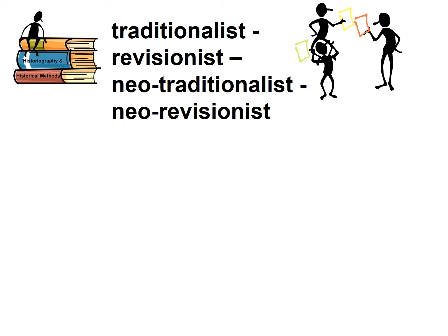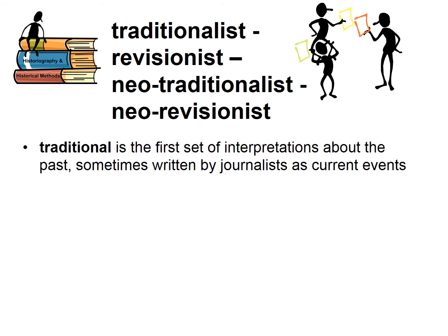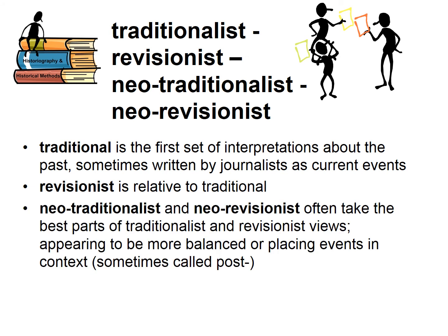There's also a whole spectrum of traditionalist and revisionist historians. Sometimes, generations later, neo-traditional or neo-revisionist or post-traditional emerge. Traditional is the first set of interpretations — so whatever that first set is becomes quote traditional. The revisionist is relative to the traditional and is oftentimes in response to it. The neo-traditionalist and neo-revisionist often take the best parts of both sides and appear more balanced, placing events into context. We'll sometimes call them post-traditionalist or post-revisionist.